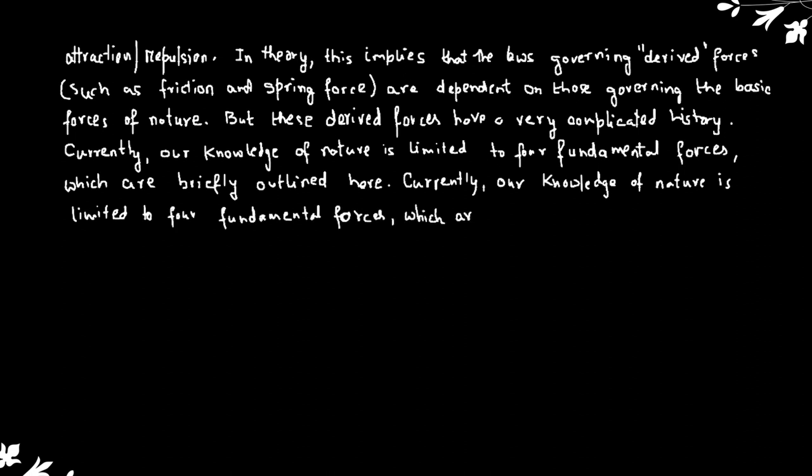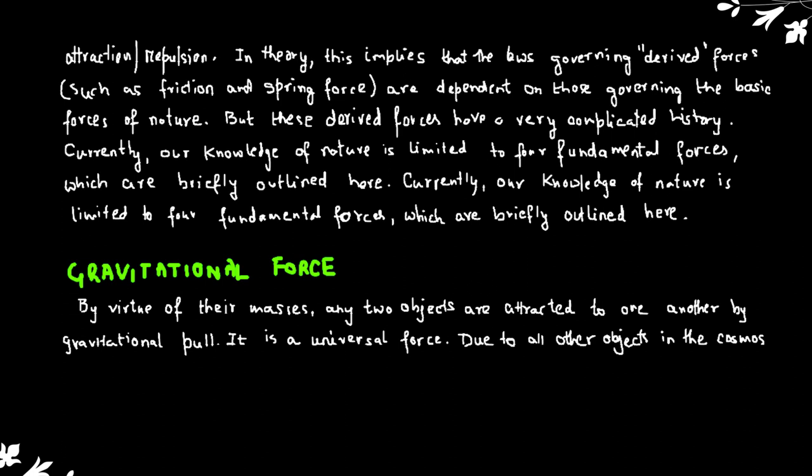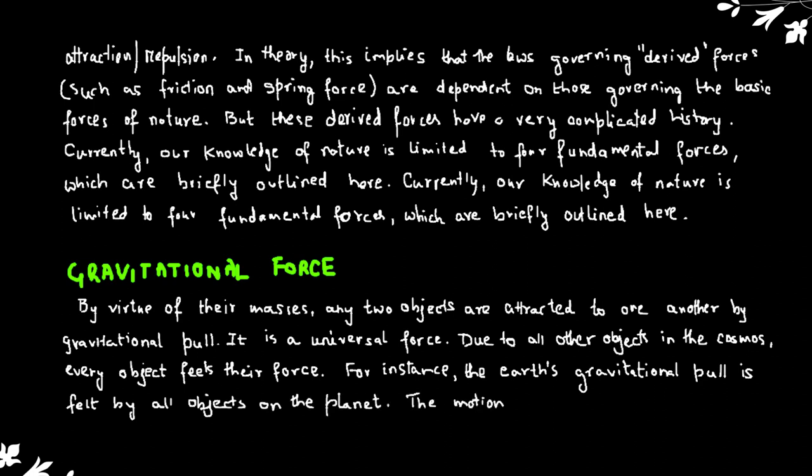Gravitational force. By virtue of their masses, any two objects are attracted to one another by gravitational pull. It is a universal force. Due to all other objects in the cosmos, every object feels this force. For instance, the Earth's gravitational pull is felt by all objects on the planet. The motion of the moon and man-made satellites around the Earth, the motion of the planets around the Sun, and, of course, the motion of objects falling to the Earth are all specifically governed by gravity.